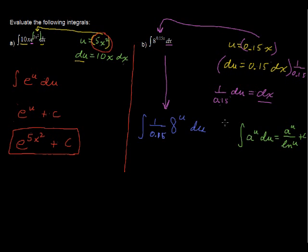So I'm just going to use that right here. I'm going to use this property, or this integral, this known integral. And I'll say 1 over 0.15, that's still there, times 8 to the u power over natural log of 8 plus c again.